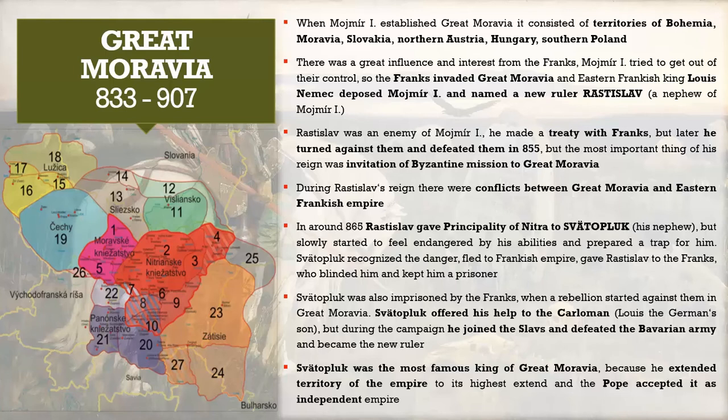Louis the German named a new ruler — Rastislav, who was a nephew of Mojmír the First. Why did he do this instead of ruling Great Moravia himself? He had great territory to govern, so it was more effective to name a governor who would be his ally — and that one was Rastislav.